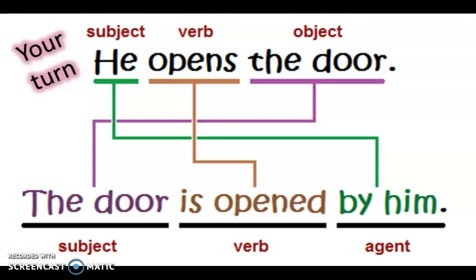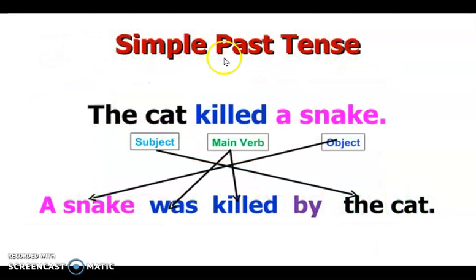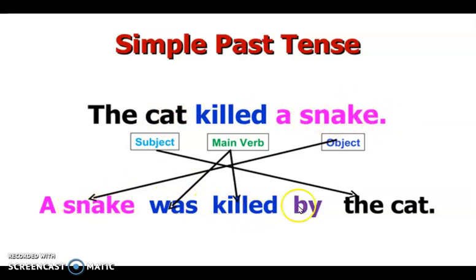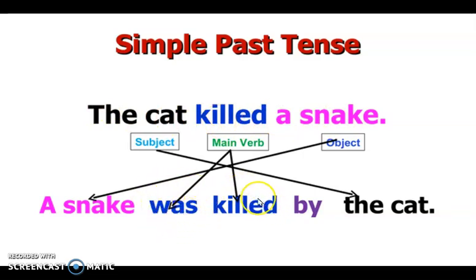Let's check another example. This is a simple past tense: 'The cat killed snake' — el gato asesinó a la serpiente. Then we have to change it — 'Snake was killed by the cat' — una serpiente fue asesinada por el gato. Checa que al ser una oración en pasado simple, tienes que utilizar la forma en pasado simple del verbo to be, además de la forma en past participle del verbo.